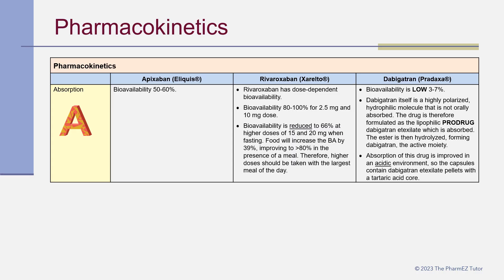Let's compare and contrast the pharmacokinetic parameters of the DOACs. First, let's talk about absorption. Apixaban has a bioavailability of 50 to 60 percent, which is moderate. Rivaroxaban has a dose-dependent bioavailability — for 2.5 mg and 10 mg doses, bioavailability is 80 to 100 percent. However, it is reduced to 66 percent at the higher doses of 15 and 20 mg when fasting. Food increases bioavailability by 39 percent, improving to greater than 80 percent with a meal, so higher doses should be taken with the largest meal of the day.